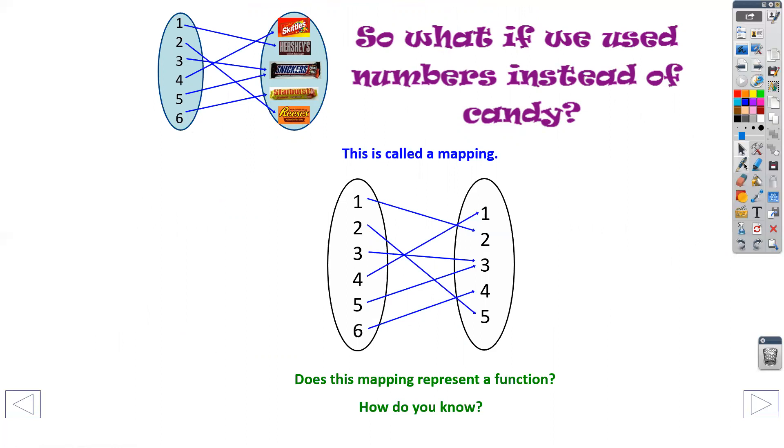And this does relate a function because for every one line drawn from, say, the X side versus the Y, for every one X, there was only one output. It only matched up with one number on my Y.